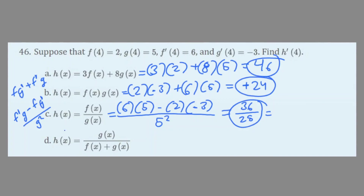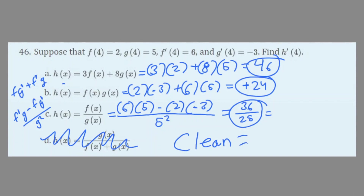Due to time constraints, we're not doing part (d). So to recap: for part (a) we used direct substitution, for (b) the product rule, and (c) the quotient rule. That's basically it for the whole video — first and second derivatives, product and quotient rules, knowing the formula values are really important. The most important part is being clean with your work, making sure everything's readable so you can figure out the derivatives easily and not make any mistakes.